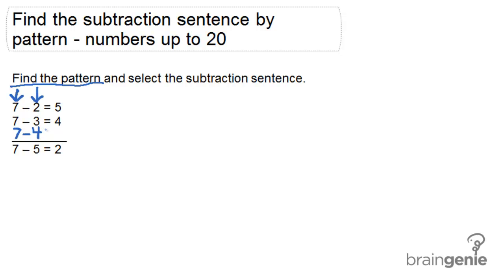So what is 7 minus 4? 3. 7 minus 4 equals 3 is the correct subtraction sentence.